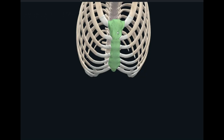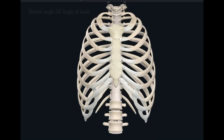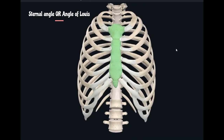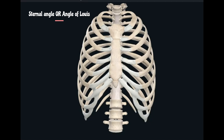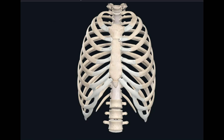The next landmark is the sternal angle, also known as the angle of Lewis. The angle of Lewis is a very important landmark that represents the junction of the manubrium and the body of the sternum. This joint line is known as the manubriosternal junction, also called the angle of Lewis or the sternal angle. This angle has very important relations with structures present in the chest cavity — you can refer to the dedicated video on the sternal angle for more detail.